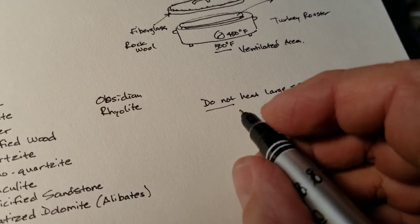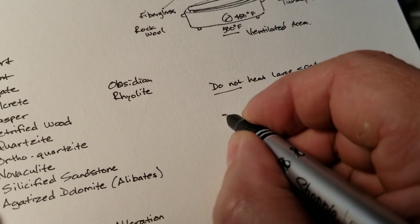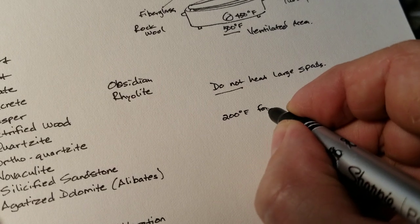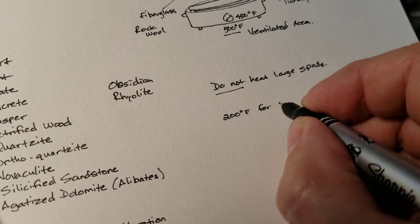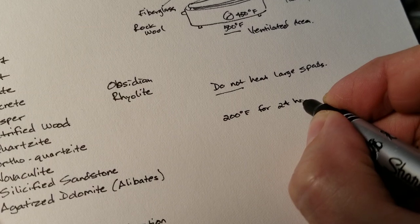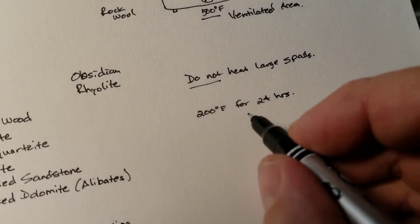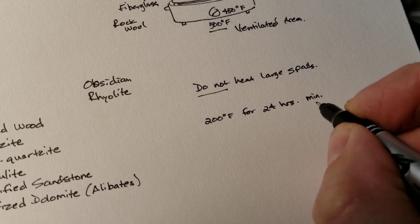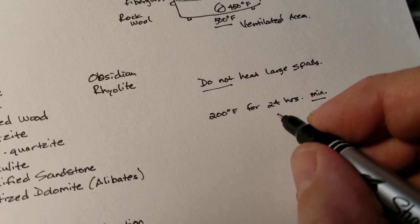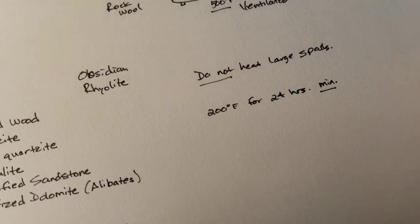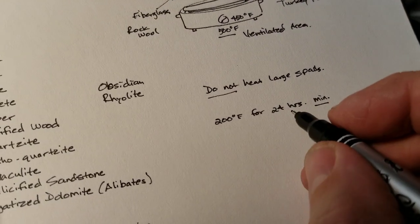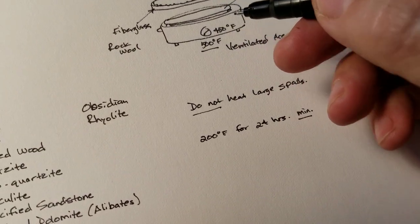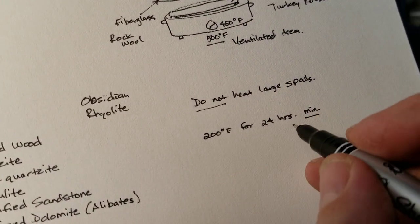So break it up and what I do is, I cook it at 200 degrees Fahrenheit for 24 hours to dry it, to do the preliminary drying minimum. You can do it for 48 hours, 72 hours, whatever. I wouldn't recommend over 72 hours.